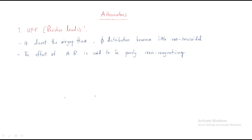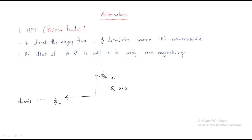In the graph, the main field flux is always in the direct axis. The armature flux, phi-a, is in the quadrature axis. This is the relationship between the two fluxes for a resistive (unity power factor) load.